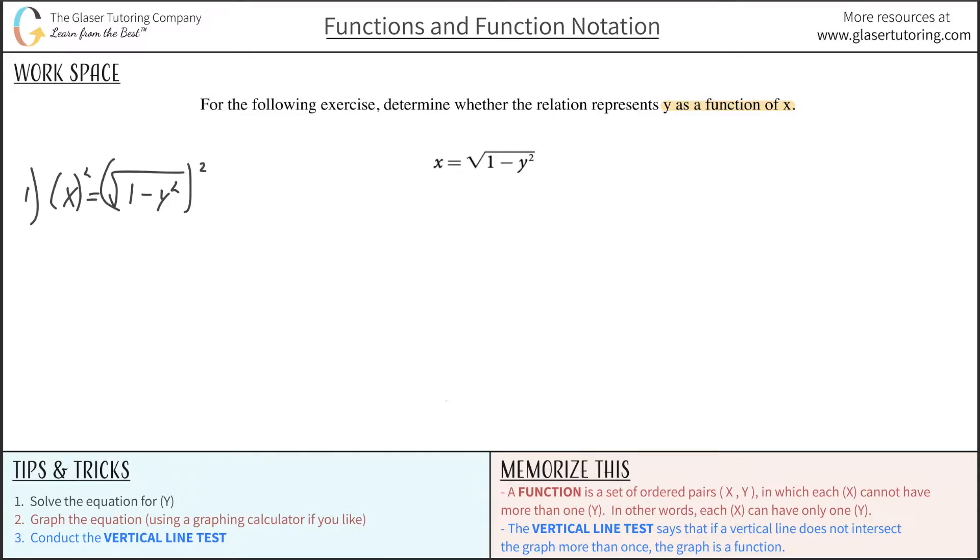Now what happens is when we square x, it just becomes x squared, right? And when we square the radical, it just cancels. So it's just going to be 1 minus y squared.